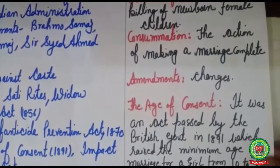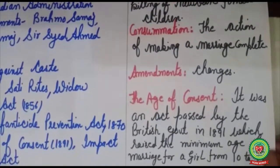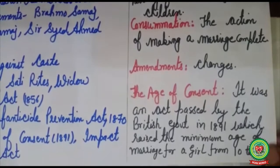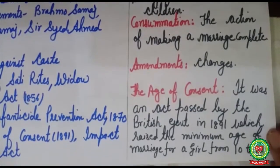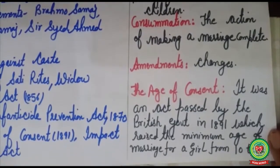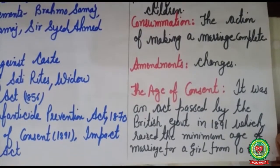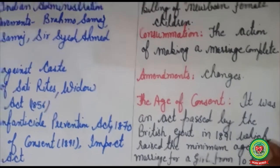The Age of Consent was an act passed by the British government in 1891, which raised the minimum age of marriage of a girl from 10 to 12.